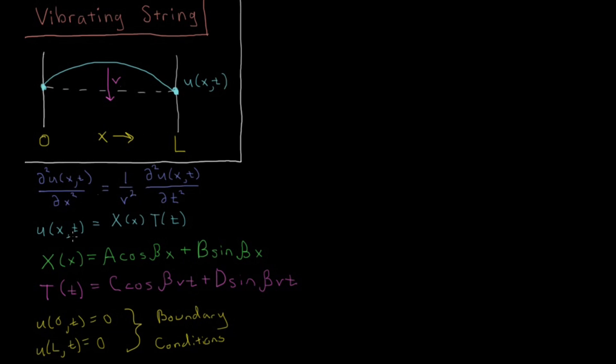If we look at the case for the spatial part, we have x of zero equals zero, thus we have equals A cosine of beta zero is zero plus B sine of zero. Well, sine of zero is just zero so this term goes away, and cosine of zero is one, so the only way to get this to equal zero is if we make A equal zero. This first condition gives us that A equals zero in the spatial part.